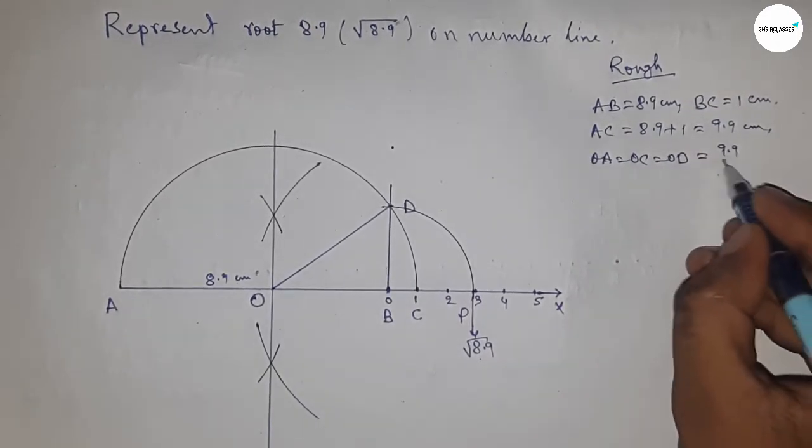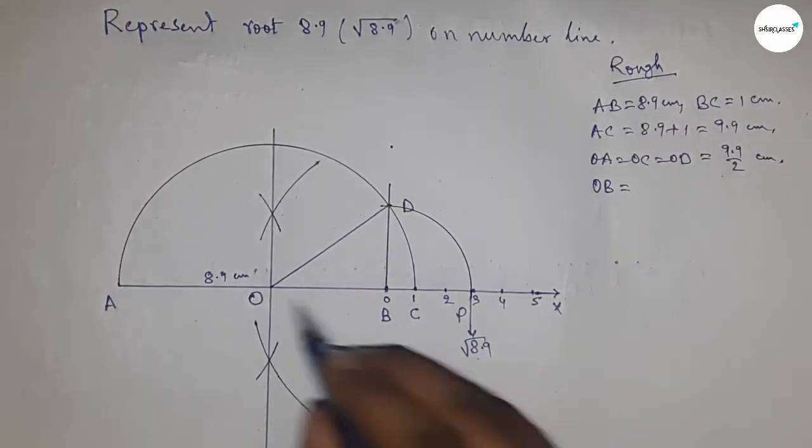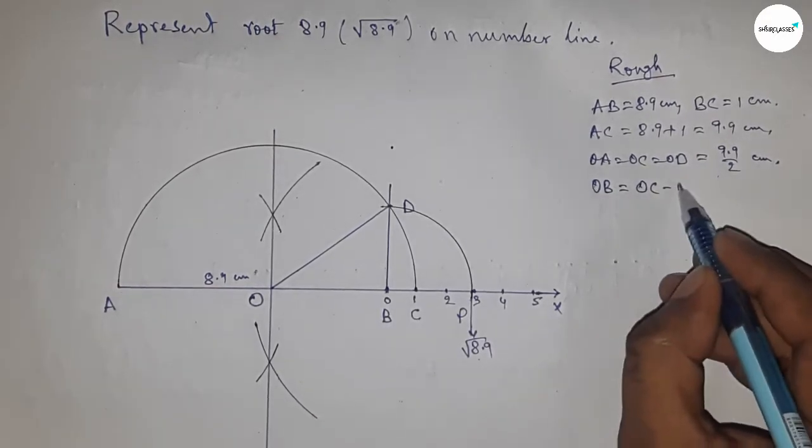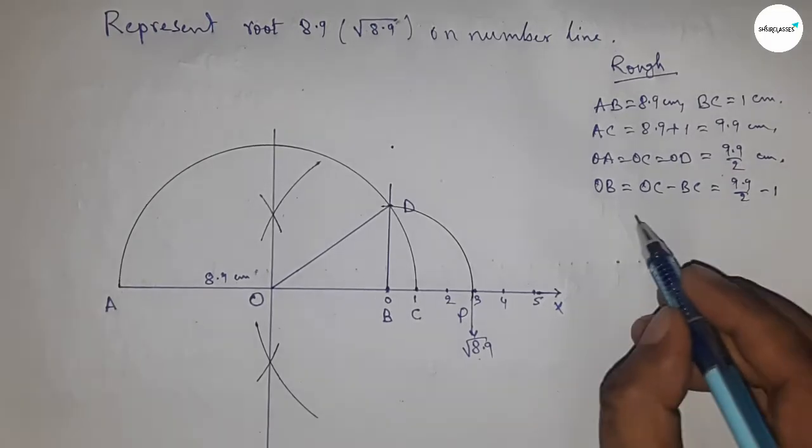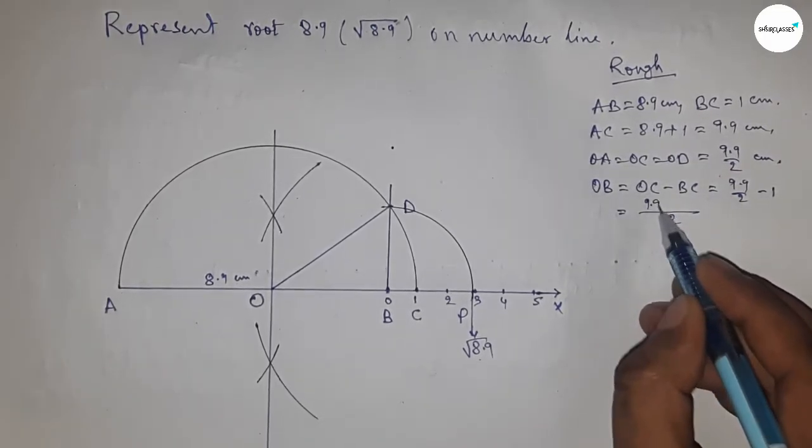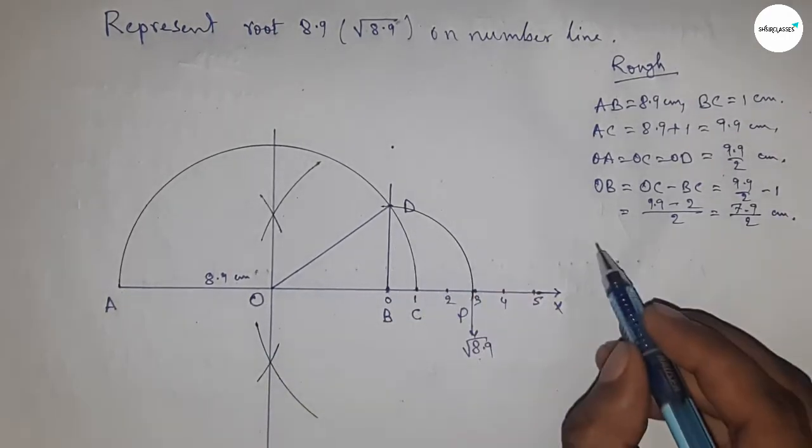Now distance OB equals OC minus BC. So putting the value of OC and BC and after calculating, this is 7.9 by 2 centimeters.